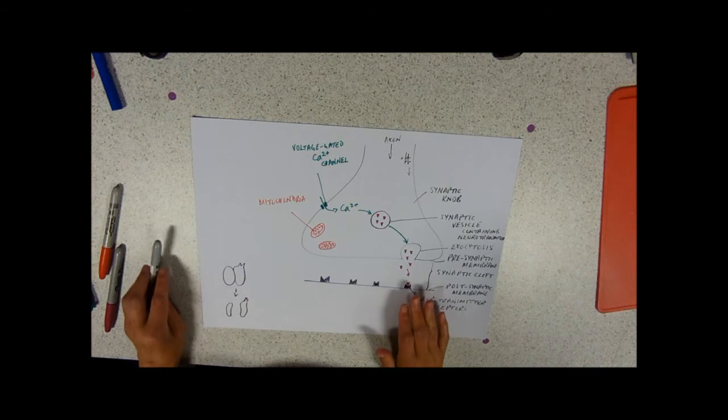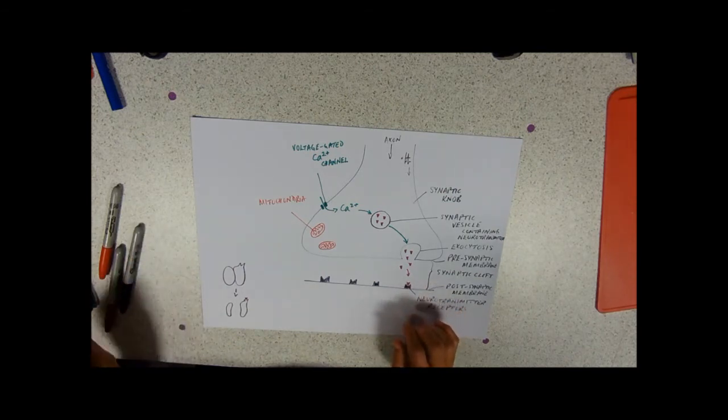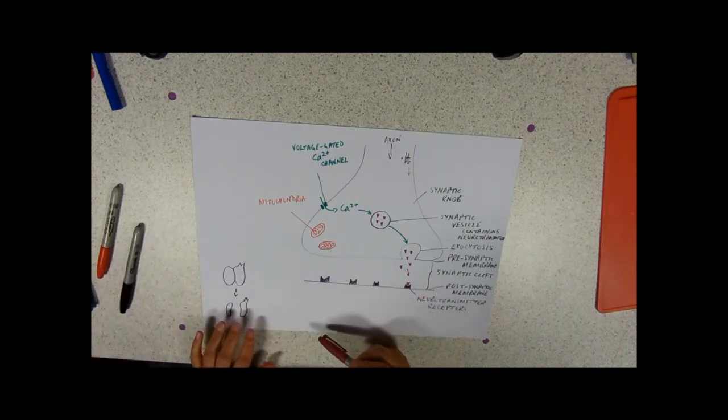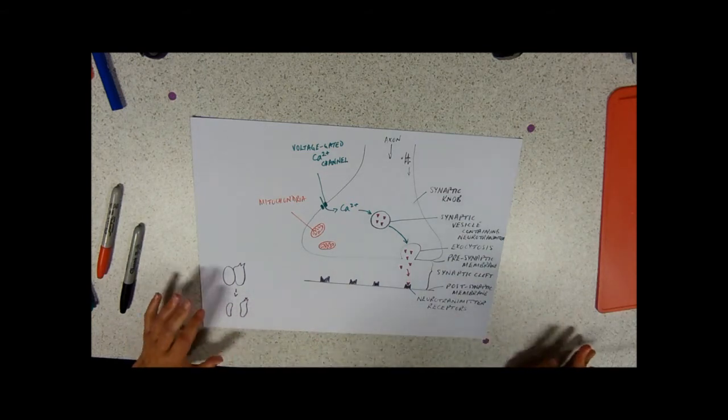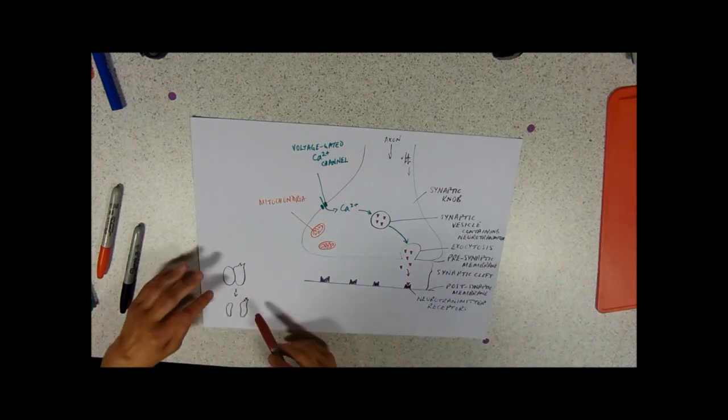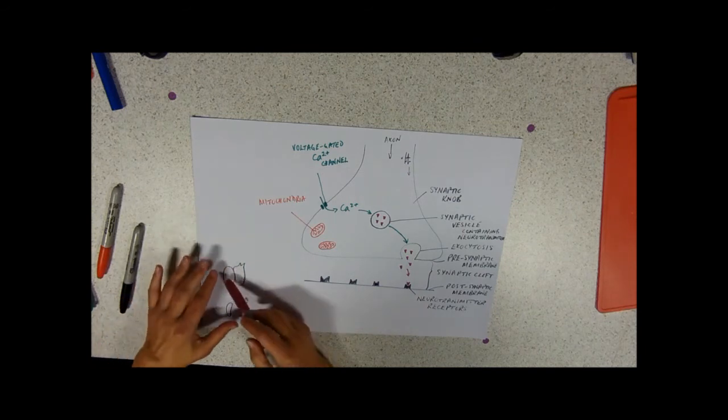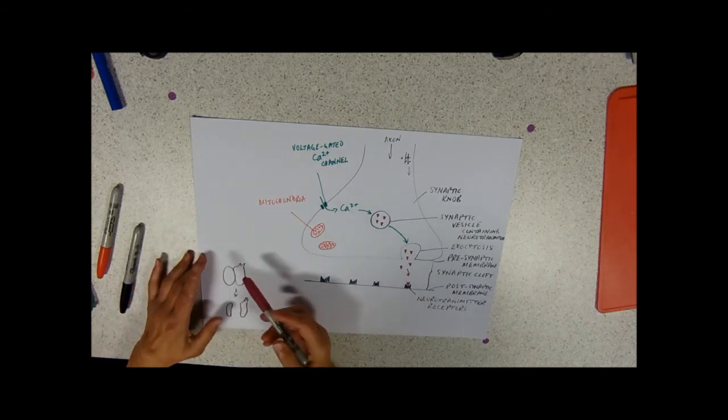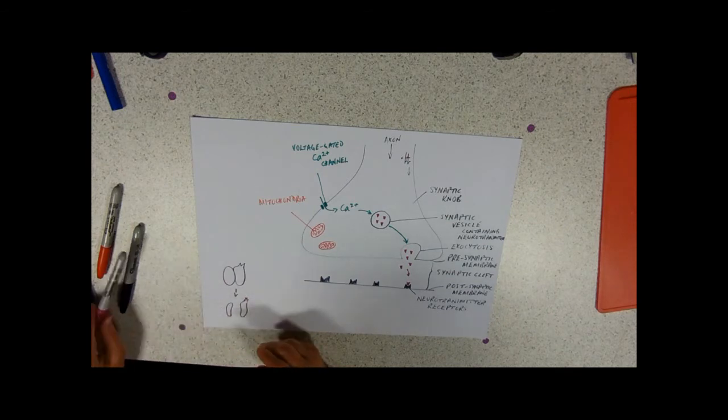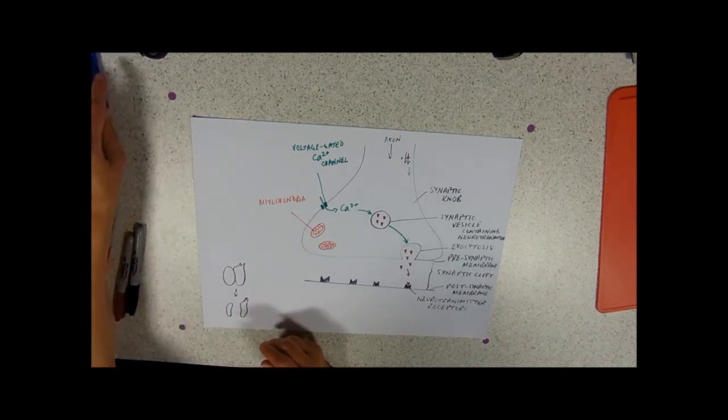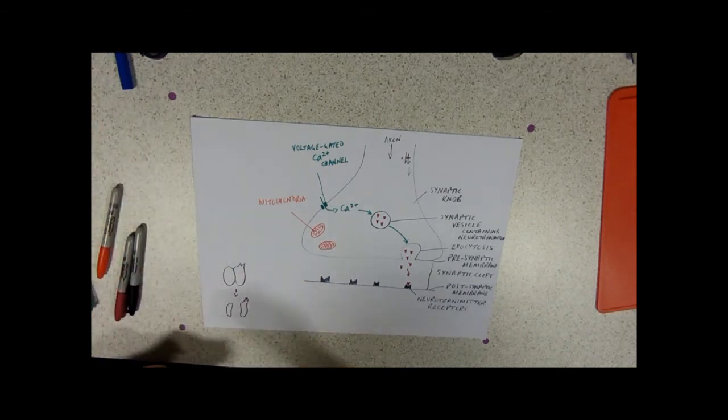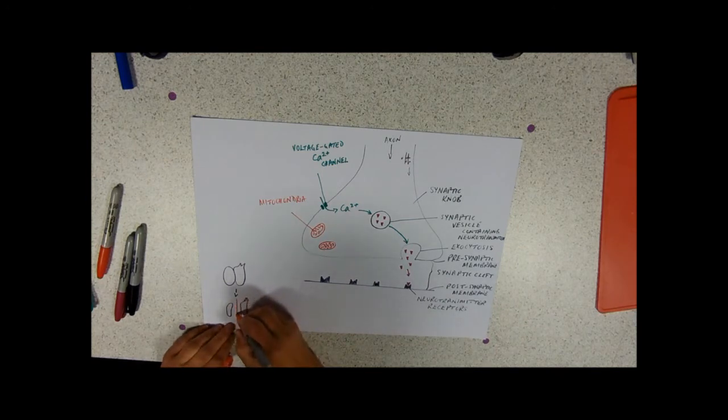Once the neurotransmitter is linked onto that receptor, those receptors are also channels. So, no neurotransmitter on the channel, it's closed. Neurotransmitter opens the channel. What's that channel for? That channel is for depolarizing sodium ions.